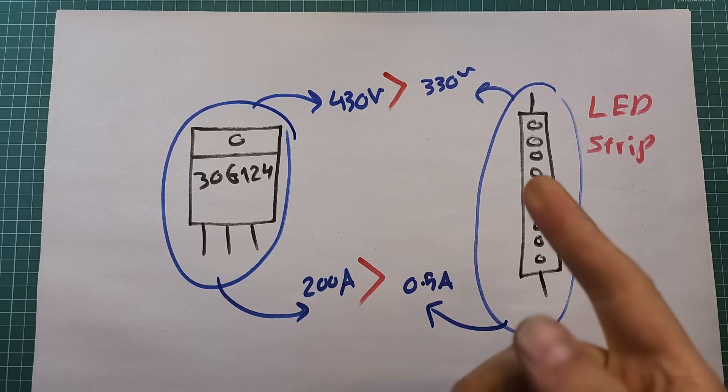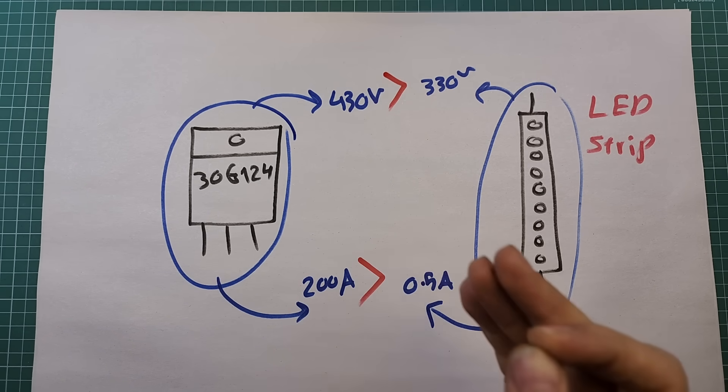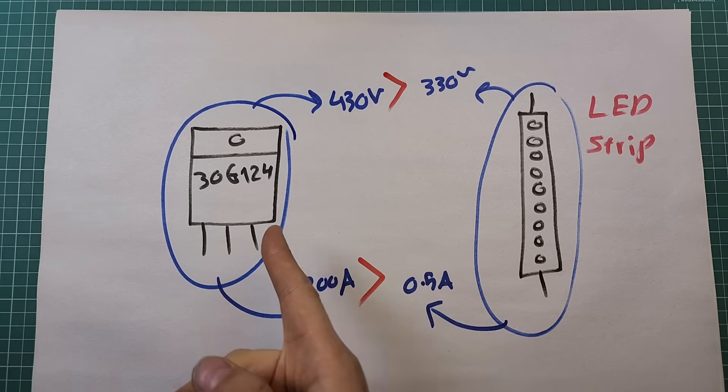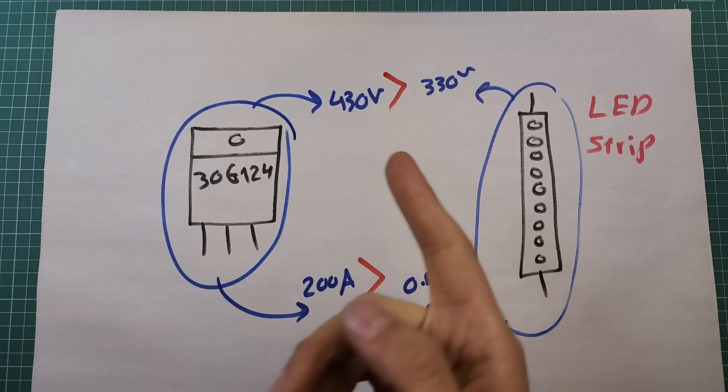This IGBT can switch much more current than we require, meaning its capabilities are being wasted here. So why use this part number when cheaper and smaller alternatives exist? The main reason is that I already had this part number in my workshop and didn't want to buy a new component. You can use a different, cheaper, smaller part number that is available to you in your own project.